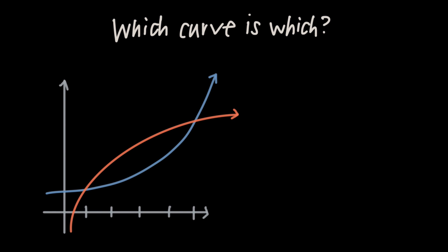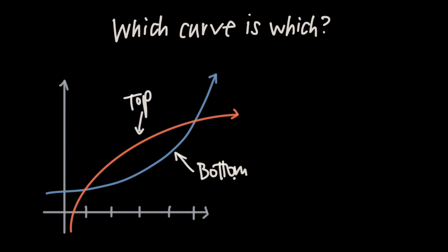So how do we figure out which curve is on the top and which one is on the bottom? The first method is just to look at a picture of the graphs. If we're lucky enough to have a picture of both curves then we can really easily identify which curve is on top and which one's on the bottom. In this case the red curve is clearly the top curve and the blue curve is clearly the bottom.